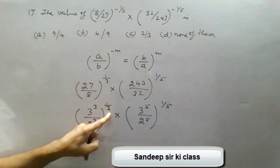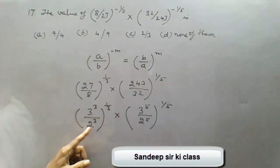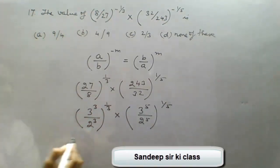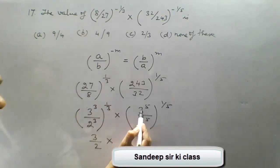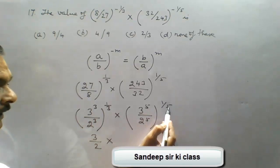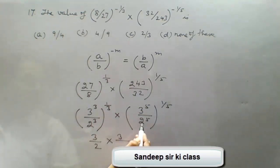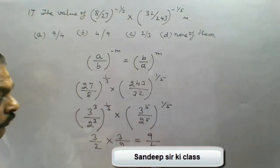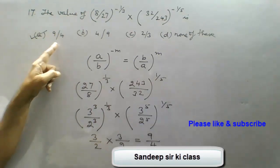Multiplying powers: 3 × (1/3) = 1, so the numerator gives 3 and denominator gives 2, making the first term 3/2. For the second term, 5 × (1/5) = 1, giving 3 in the numerator and 2 in the denominator, so the second term is also 3/2. Multiplying 3/2 × 3/2: 3 × 3 = 9 and 2 × 2 = 4, giving 9/4. So option A is correct — the simplified value is 9/4.